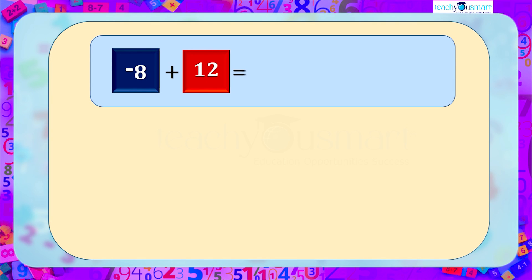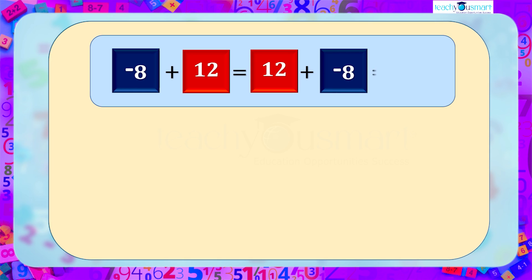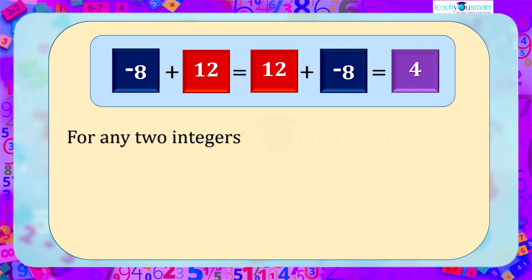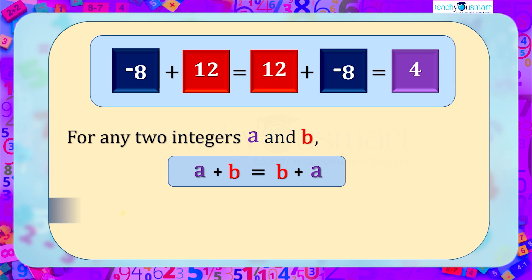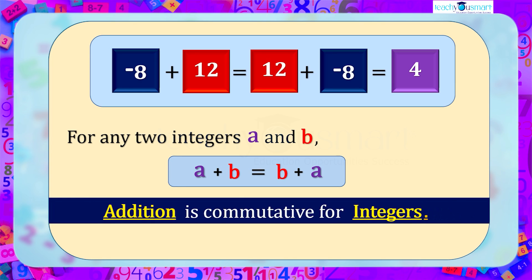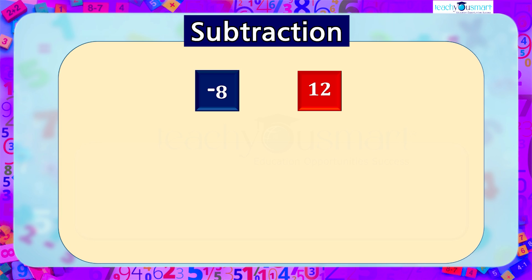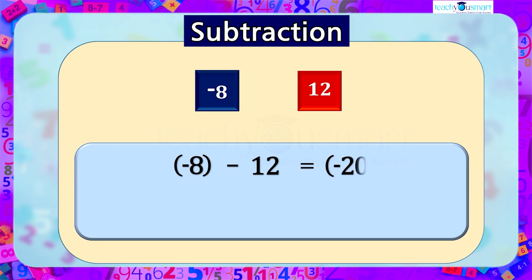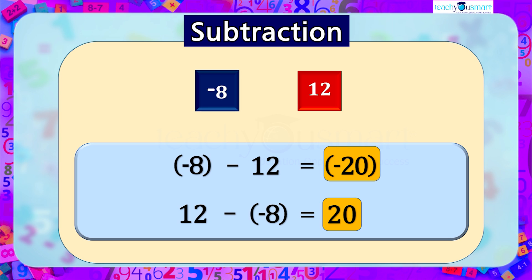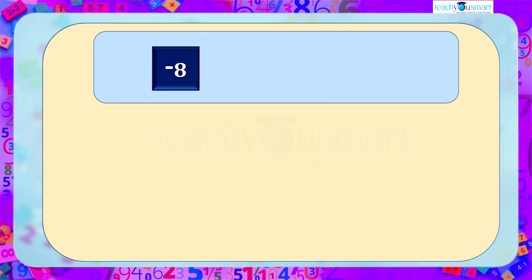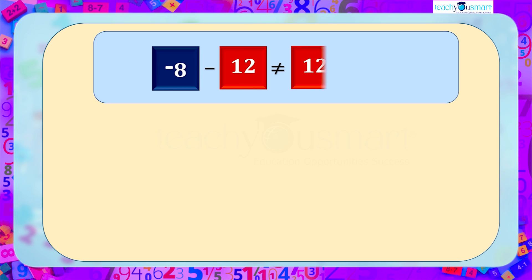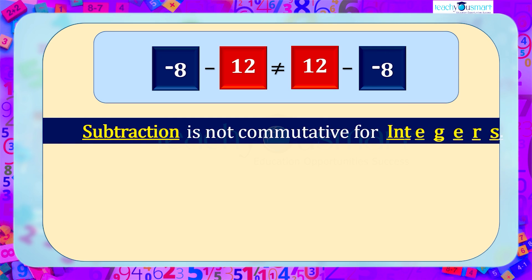That is, minus 8 plus 12 equals 12 plus minus 8, equal to 4. For any two integers a and b, a plus b equals b plus a. So addition is commutative for integers. Now let's look at subtraction of integers. Subtracting 12 from minus 8, we get minus 20, and subtracting minus 8 from 12, we get 20. That is, minus 8 minus 12 is not equal to 12 minus minus 8. Therefore, subtraction is not commutative for integers.